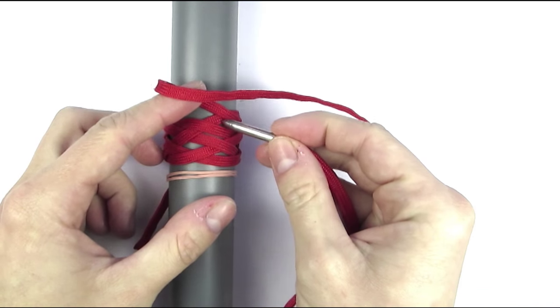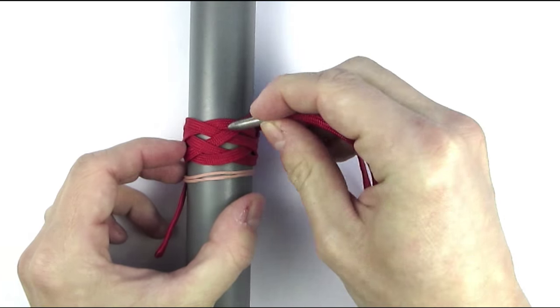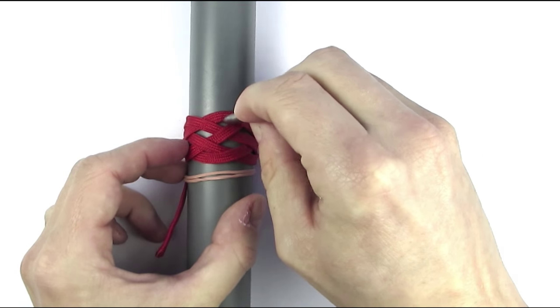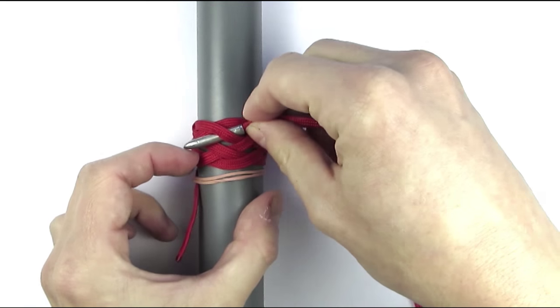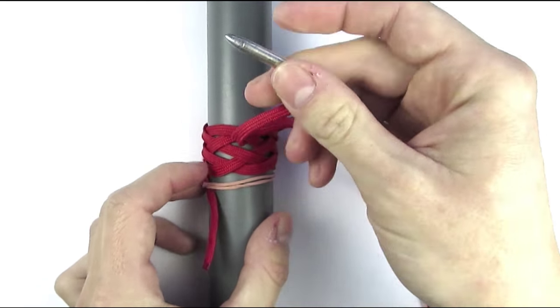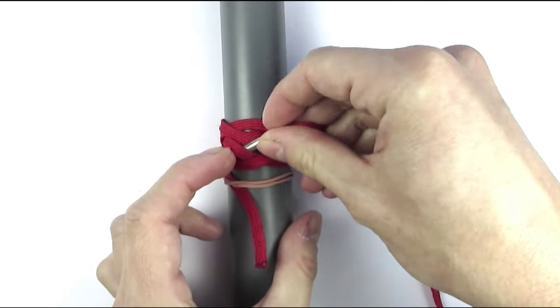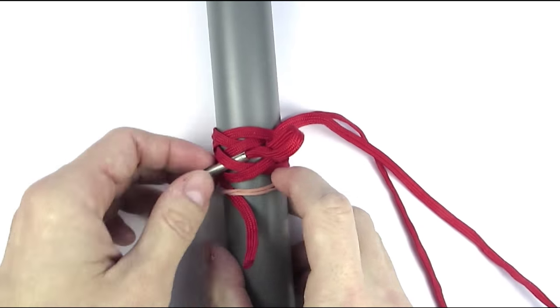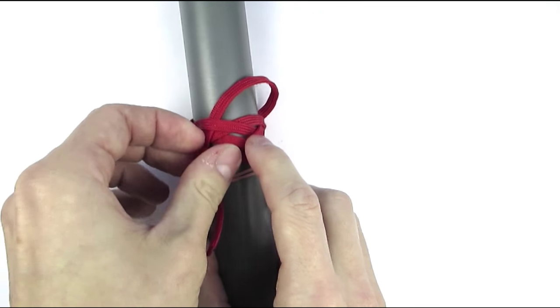And then over to our left, this time we're going to go over since the previous cord went under. So over, under, over, under and over. We have now laid the tracks which we need to split.